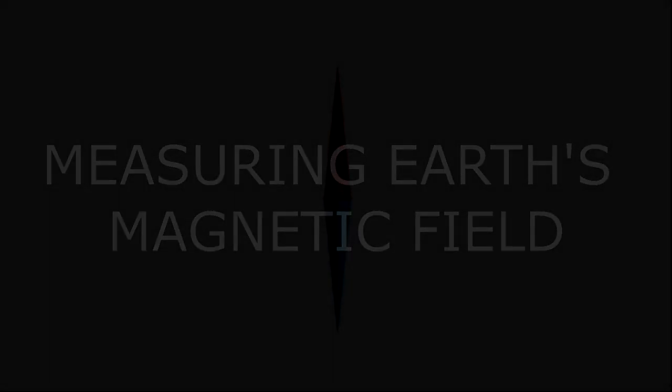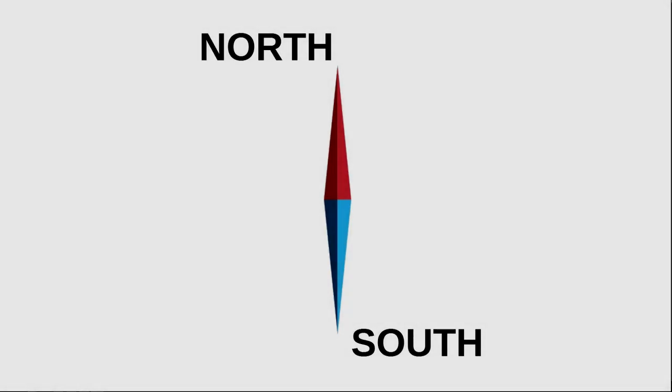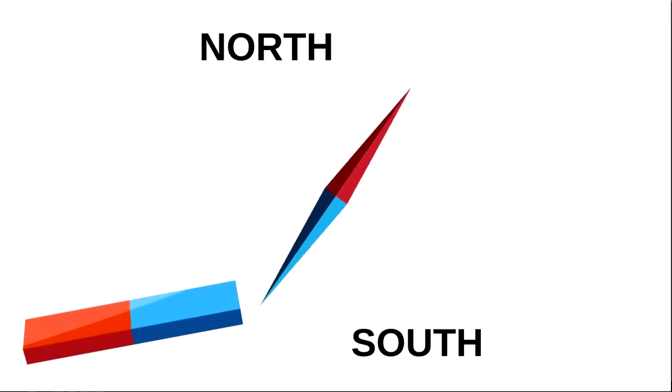Do you know what a magnet is? A magnet is a magnetic object that has north and south poles, and opposite poles attract, and like poles repel.